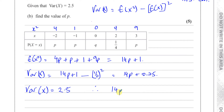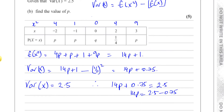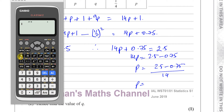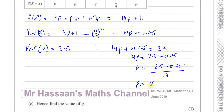So we can say 14P plus 0.75 equals 2.5, which means 14P equals 2.5 minus 0.75. So P equals (2.5 minus 0.75) divided by 14, which gives us one eighth. So we now know that P is one eighth.